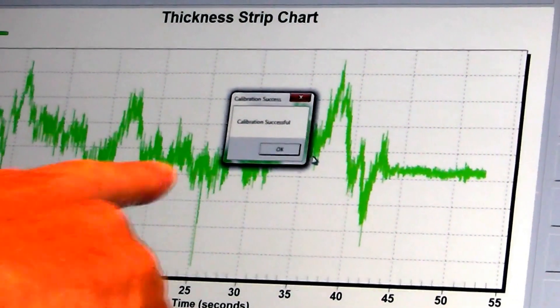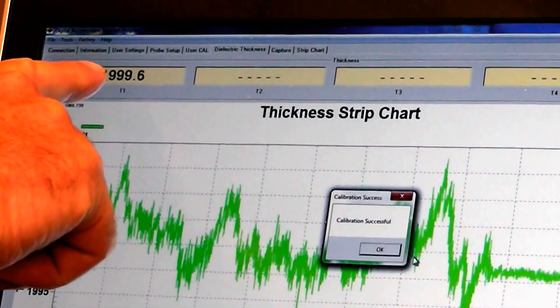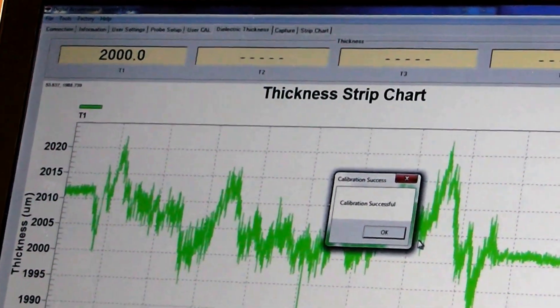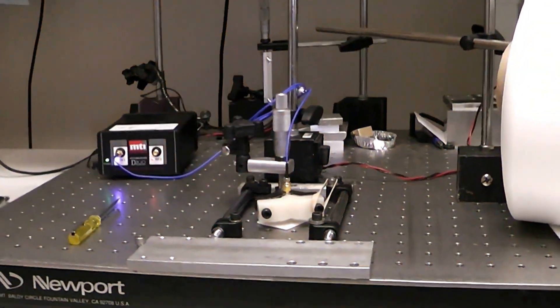The system generates this calibration. It tells you the calibration was successful. You can see our sample thickness in there right now. And we're all set to go for measuring the rest of the roll.